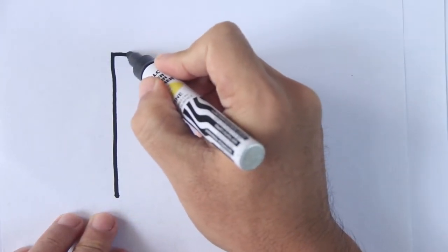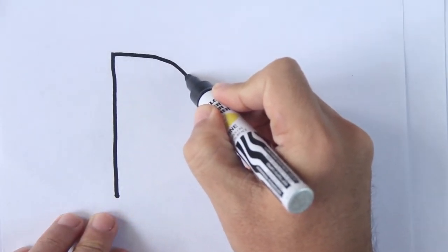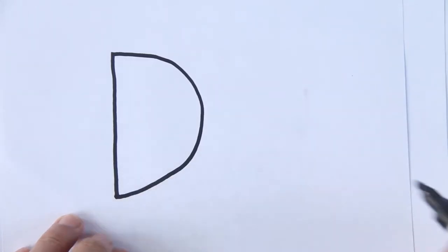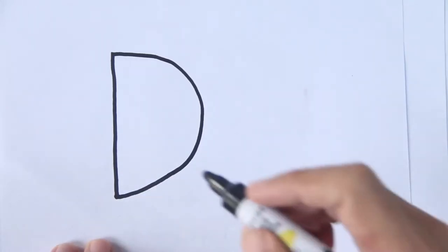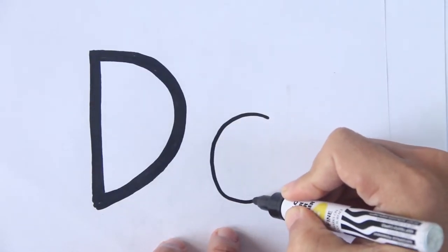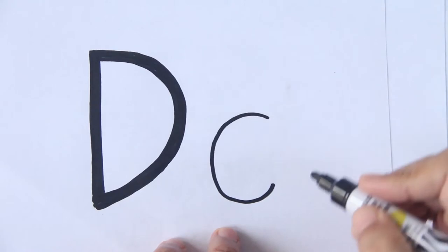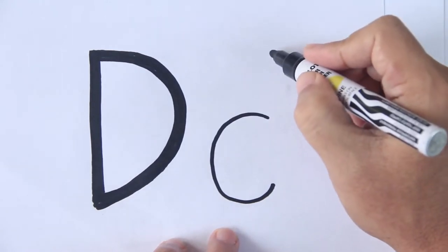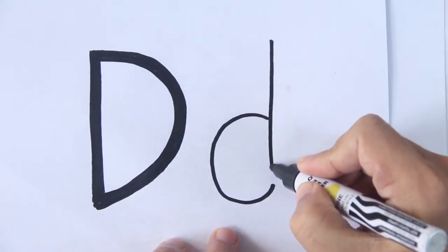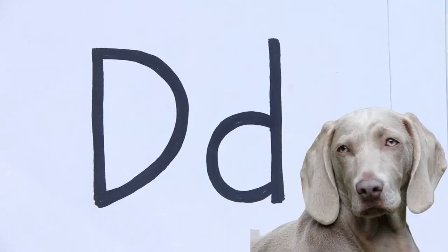This is capital letter D. And this is small letter D. D is for dog. Let's draw a dog.